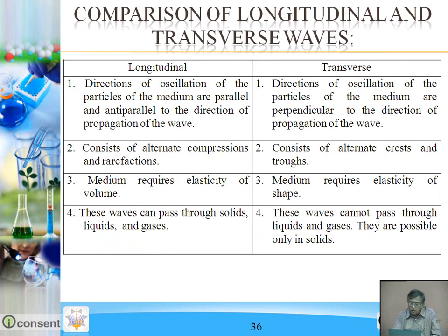Comparison of longitudinal and transverse waves. In longitudinal waves, directions of oscillation of the particles of the medium are parallel and anti-parallel to the direction of propagation. In transverse waves, directions of oscillation are perpendicular to the direction of propagation. Longitudinal waves consist of alternate compressions and rarefactions — there is a change in pressure and density. Transverse waves consist of alternate crests and troughs. Longitudinal waves require elasticity of volume; transverse waves require elasticity of shape. Longitudinal waves can pass through solids, liquids, and gases; transverse waves can only pass through solids.